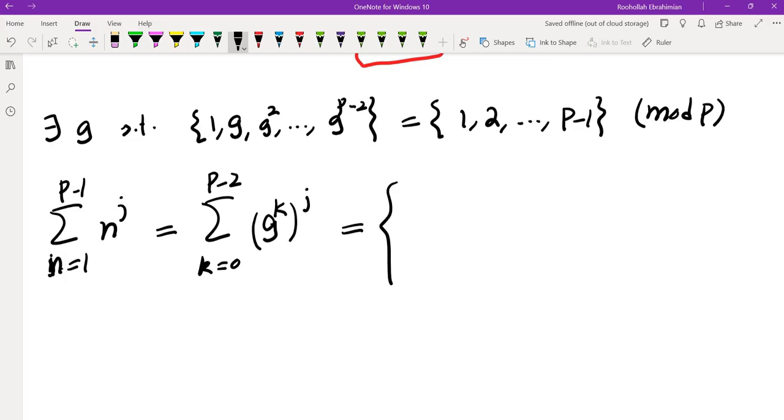Well, it depends on the common ratio. In most cases, it would be the first term, which is 1, minus the term after last, which is G^((P-1)j), divided by 1 minus the common ratio. And what is the common ratio here? It's G^j.